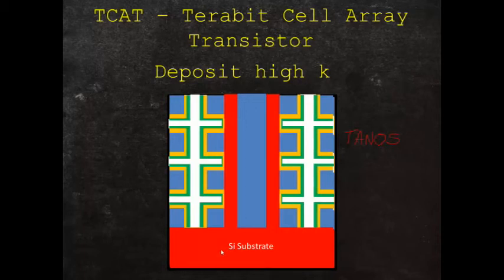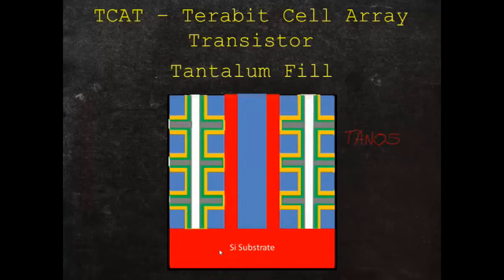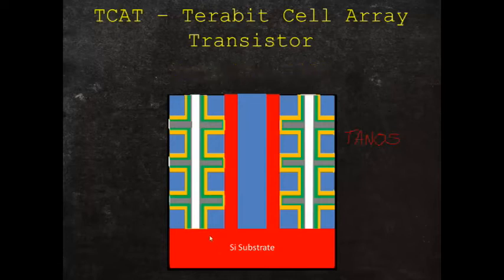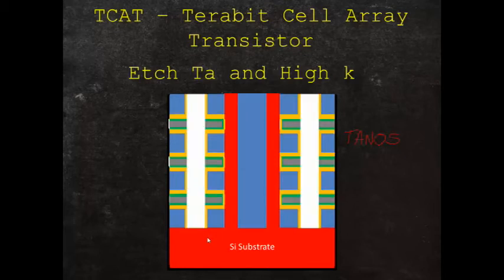Tantalum nitride is then used to fill in these holes. Once the tantalum nitride is in, it will be etched out of the slit so that it's removed and the alumina is removed from the surfaces of the fins. So we etch the tantalum and the high-K. What we're left with is a central column that is now a string of vertical NAND TANOS transistors. We notice that in TCAT, we built the gate last, whereas in BICS, we built the gate first.